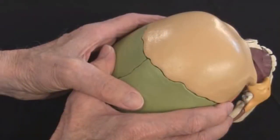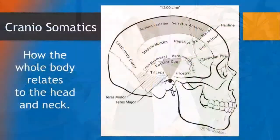Most of the cranial sutures relate to the function of one or more specific muscles. The sagittal suture is related to abdominis rectus, but that's just one example. We have identified more than 40 other muscles and the specific sutures that relate to them.